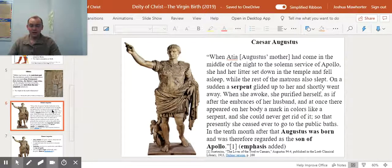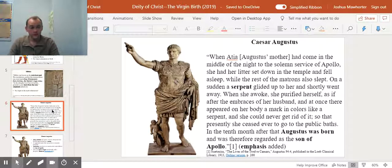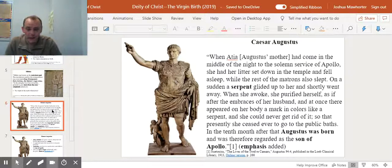Caesar Augustus. Now, Jesus, I believe in some texts like Mark 1:1, is paralleled with Caesar Augustus or the other Caesars. But I think it is by way of contrast. But here, see if this sounds like virgin birth. The myth of Caesar's birth. Caesar Augustus was born or was around during, I believe, 9 B.C. As when Atia, Augustus' mother, had come in the middle of the night to the solemn service of Apollo, she had her litter set down in the temple and fell asleep, while the rest of the matrons also slept.